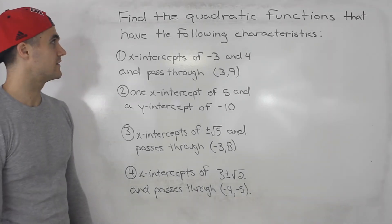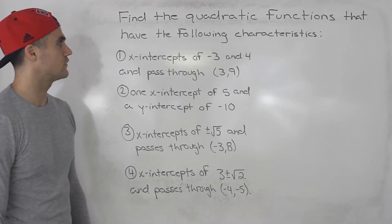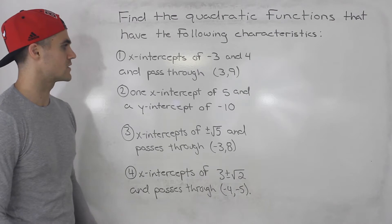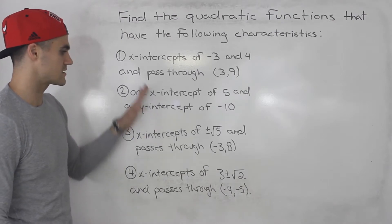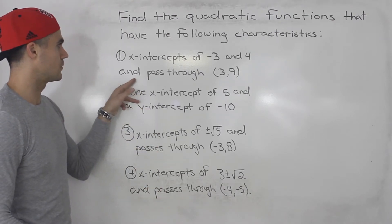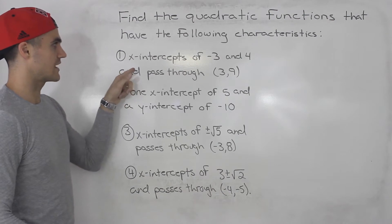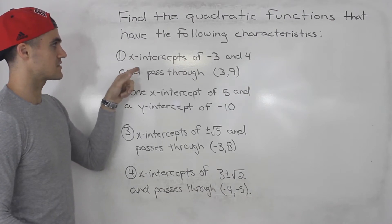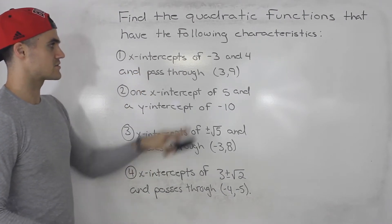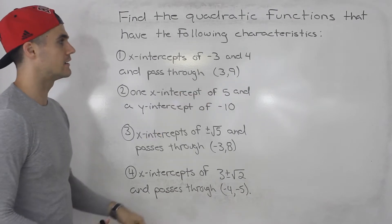Welcome back. In this video we have to find the quadratic functions that have the following characteristics. There are basically four different questions. Starting off with number one: a quadratic function that has x-intercepts of negative three and four, and passes through the point (3, 9).